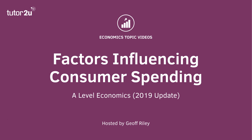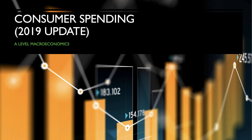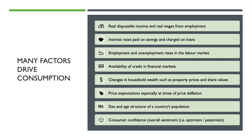Hi there and welcome to a macro video looking at some of the key factors influencing consumer spending in the UK economy. We'll be using up-to-date information to see the direction in which consumption might take in the months ahead. Consumer spending is easily the biggest component of aggregate demand, so an understanding of factors affecting household spending on goods and services is crucial when analyzing and evaluating different stages of the economic cycle.